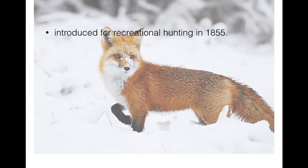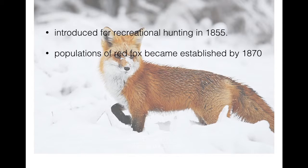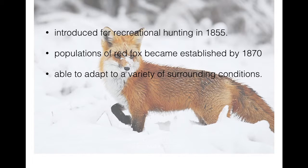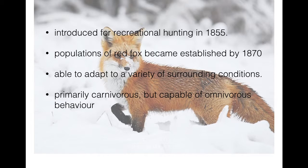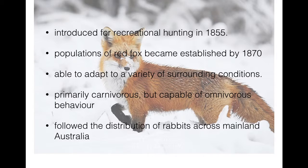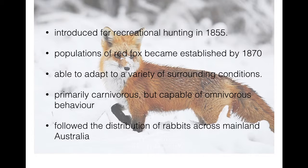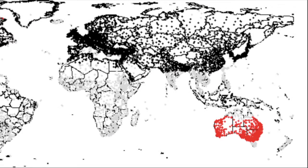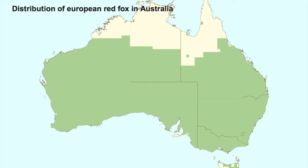In 1855, the red fox was introduced purposely for recreational hunting. The first successful invasion of red foxes occurred in southern Victoria. Their populations became established by 1870 and spread across Australia within 100 years. Being distributed worldwide and able to live in many habitats, red foxes adapt to changing conditions easily. They are primarily carnivorous but capable of omnivorous behaviour, allowing survival when prey is scarce.